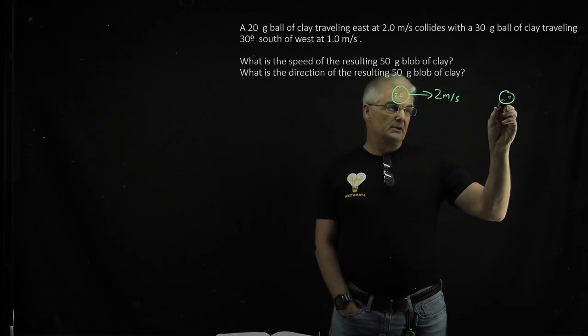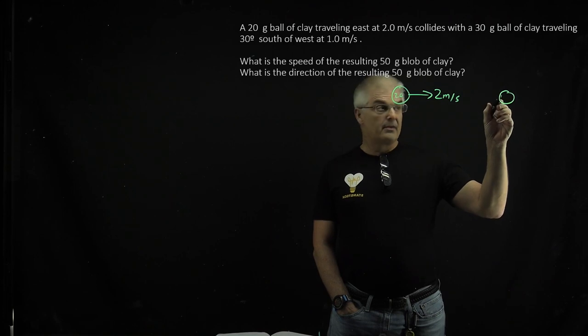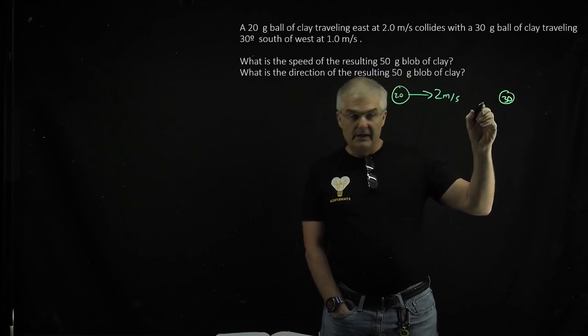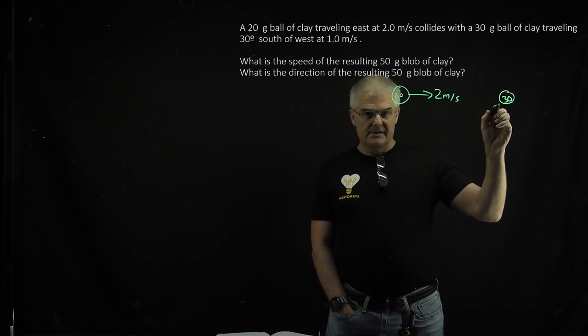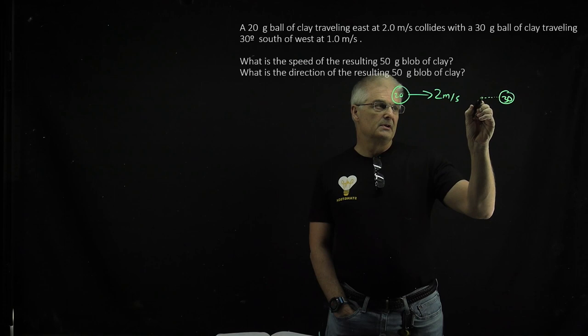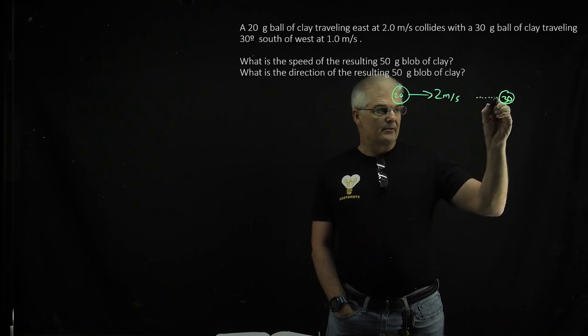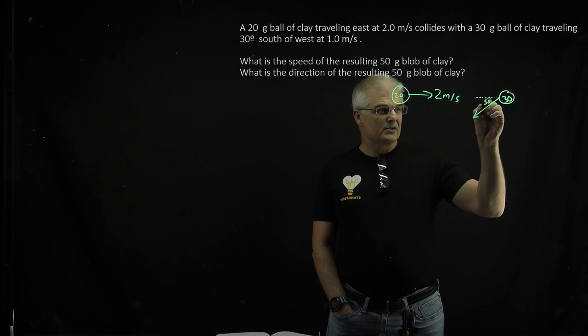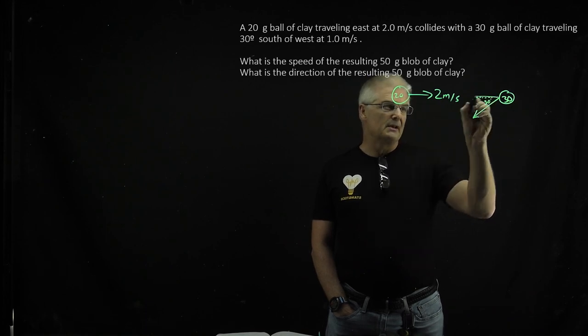We've got another ball weighing 30 grams, heavier, moving 30 degrees south of west. That means I go west first and drop down 30 degrees. It's going at this angle where this is 30 degrees. It's super important that you get that correct.